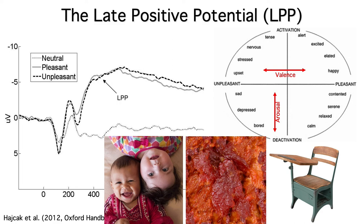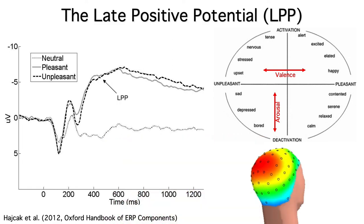Some researchers think that the LPP is the same thing as the P3. It has a pretty similar scalp distribution, but other researchers think that other sources also contribute to the LPP.